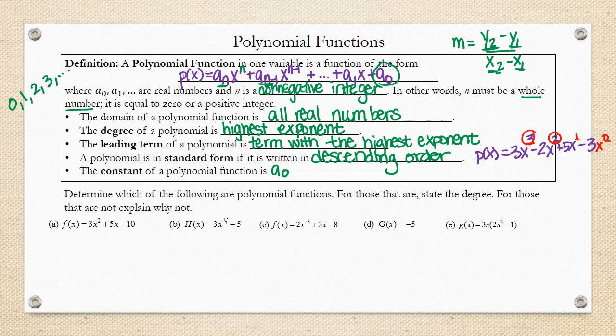In order to be a polynomial function, the biggest thing that we look for is that the exponents are non-negative integers. So, looking at letter a, we can see that the exponents for each term, that one is 2, this one would be 1, and this one would be 0. So, we can see those are all non-negative integers. They're these whole numbers. So, this is a polynomial. Now, if I had to state the degree. So, remember, degree is the highest exponent. So, the largest exponent for a is 2.